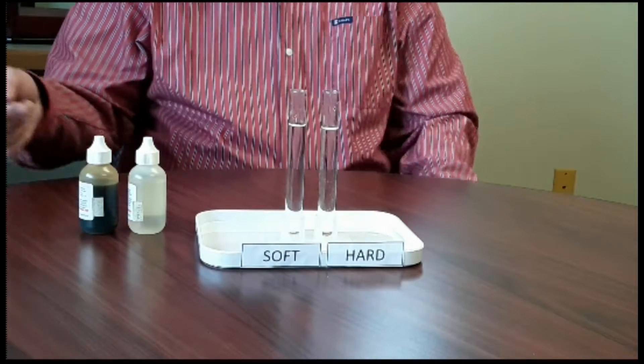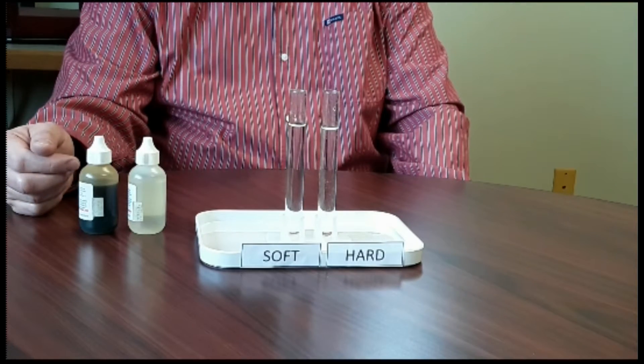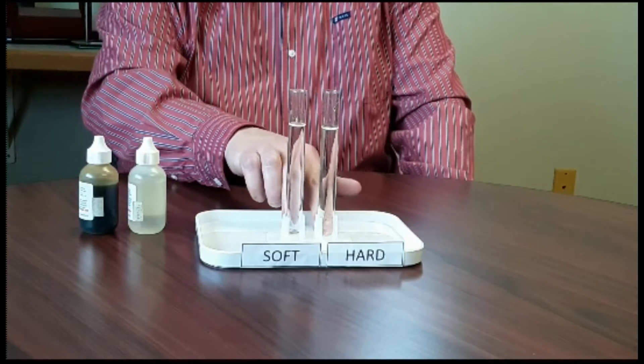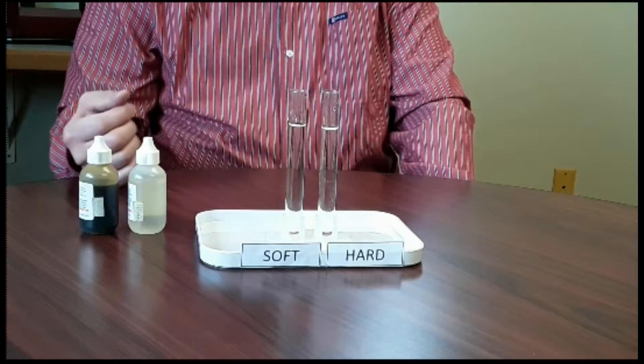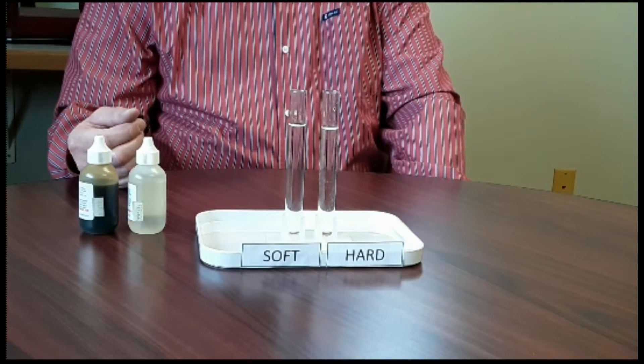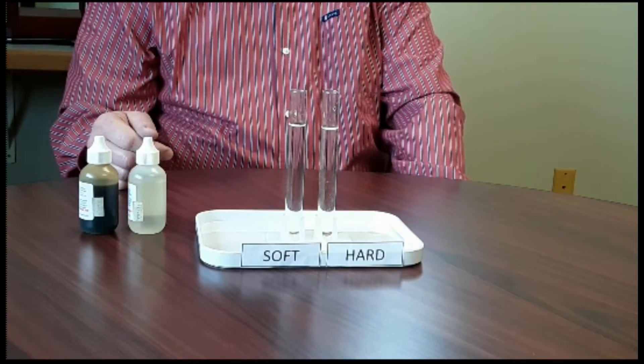We're here today to show you a precipitation test. What we're going to do is add two solutions - hard water in one vial, soft water in another vial. This is going to physically let us see the hardness in your water, which is the dissolved solids, calcium, and magnesium.